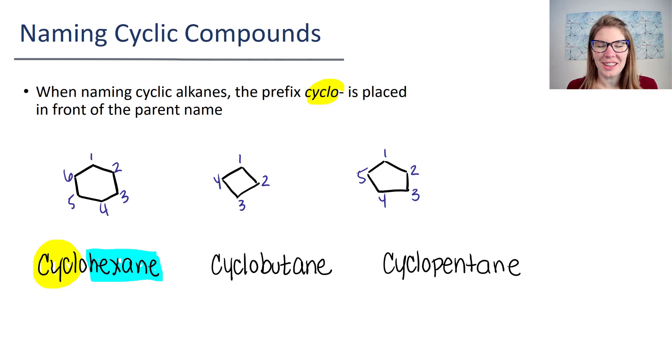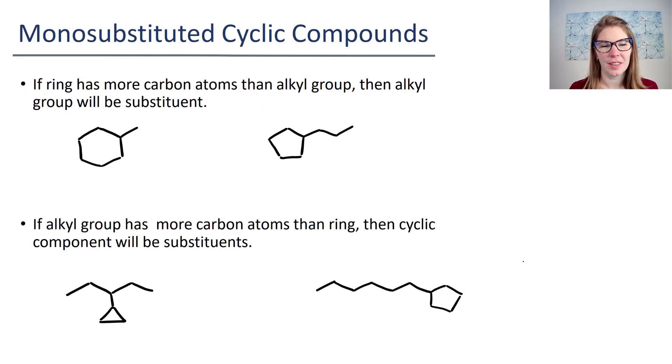This always lulls us into a false sense of security that naming cyclic compounds is really easy. Well, naming cyclic compounds that don't have any substituents is perfectly fine, but let's add a layer of difficulty to it. We're going to start with one substituent—that's called a monosubstituted cyclic compound. If your ring has one substituent and the substituent is small, so it's smaller or has fewer carbons than the ring, then you're going to name your ring as the parent and the alkyl group as the substituent.